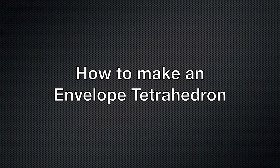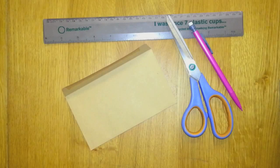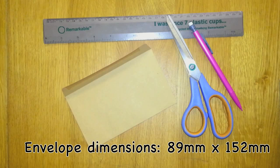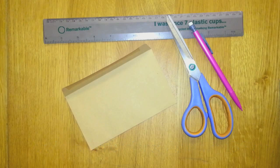This is how to make an envelope tetrahedron. These are the things you'll need. You need an envelope, some scissors, a pencil, a ruler, preferably a long one, and some sellotape.